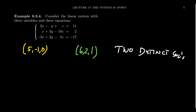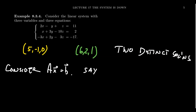We found two distinct solutions to this system. It turns out that if you have two different solutions you actually have infinitely many solutions — that's always the case. Because if you take any affine combination of two distinct solutions, that always gives you another solution. Consider the system of equations Ax equals b. Suppose Au equals b, so u is a solution, and Av equals b, so v is also a solution. We say u and v are solutions to the system.